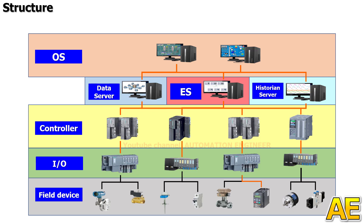One more thing is about the communication between the OS, the server, the ES, the controller, and the IO — it is Ethernet, also known as Profinet. For the field device, PCS7 supports fieldbus protocols. So this is the structure of Simatic PCS7.